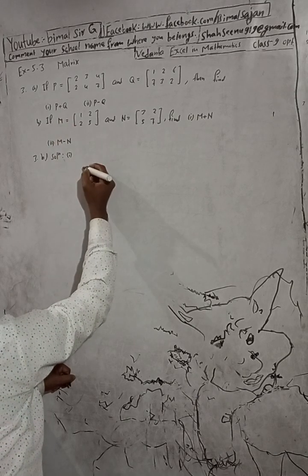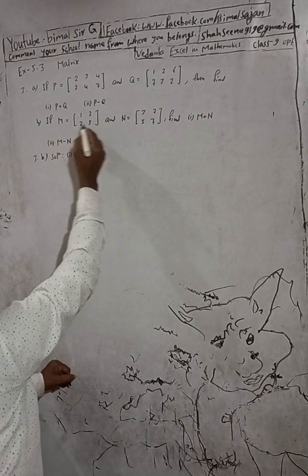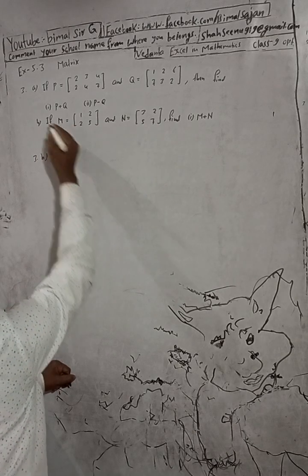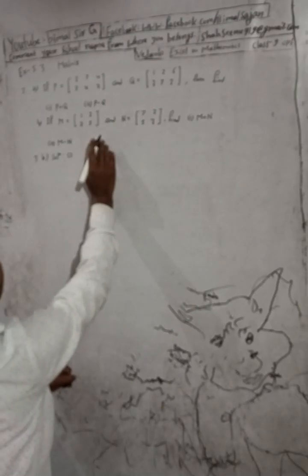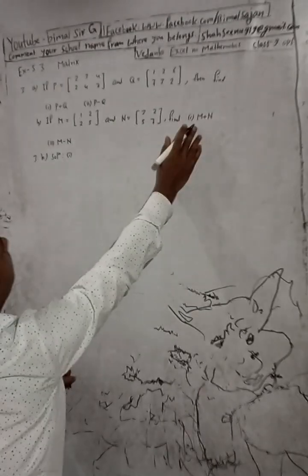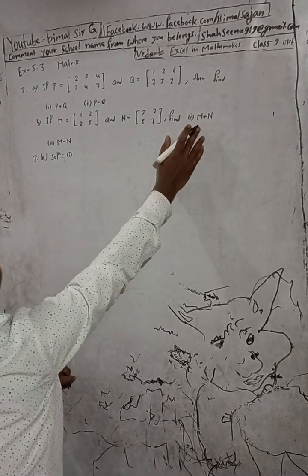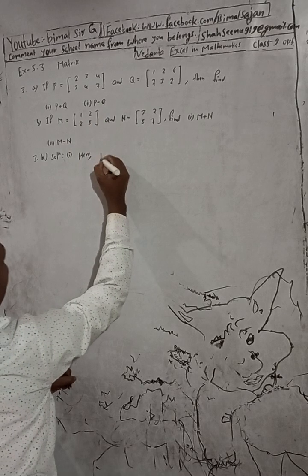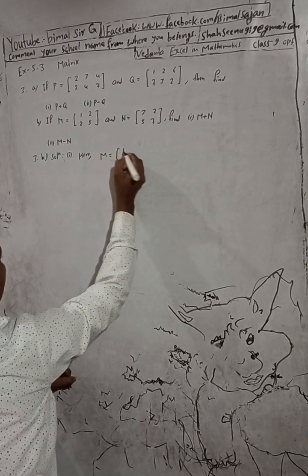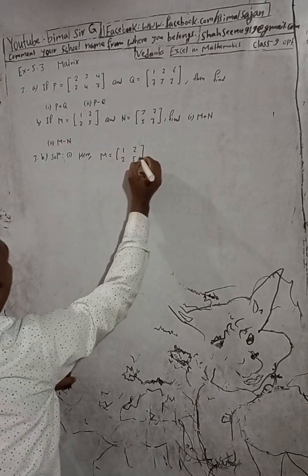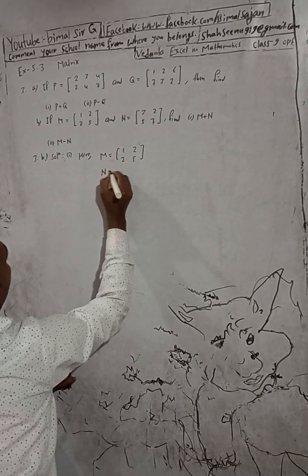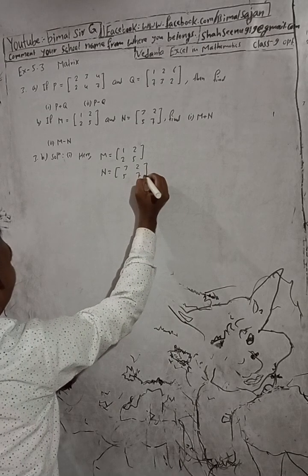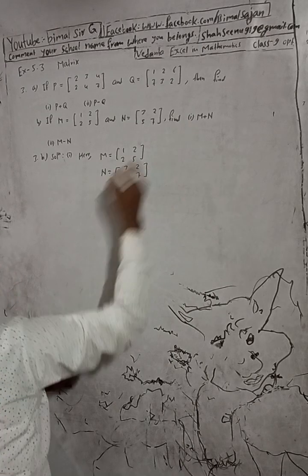For B number: given YM is equal to [1, 2 / 2, 5] and YN is equal to [3, 2 / 5, 7]. Find number 1: YM plus YN, and number 2: YM minus YN. Given: YM equals [1, 2 / 2, 5] and YN equals [3, 2 / 5, 7]. For number 1 we have to find YM plus YN.